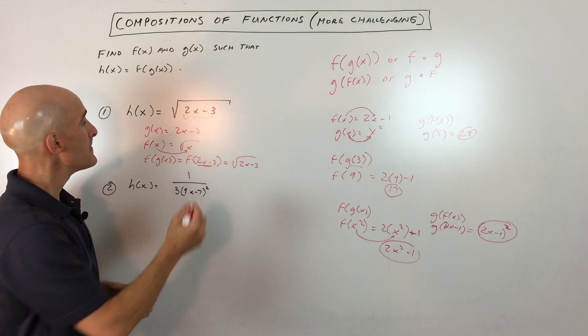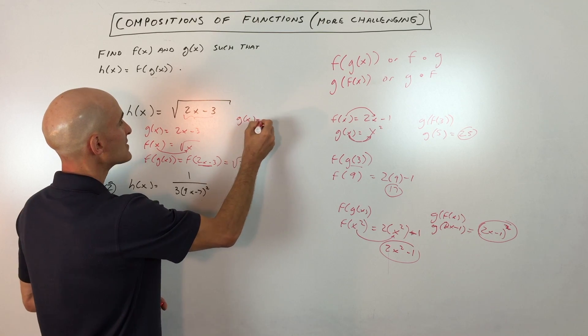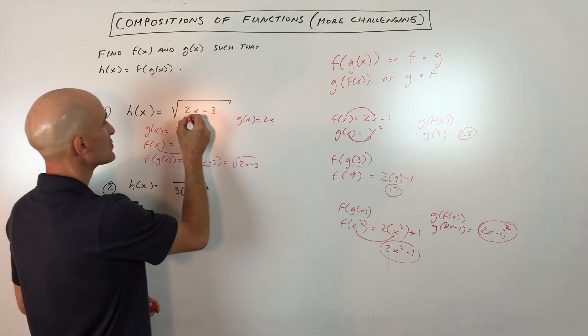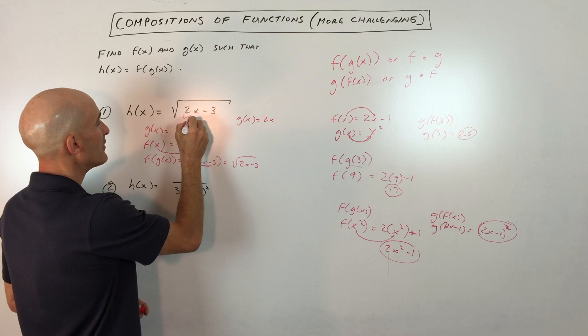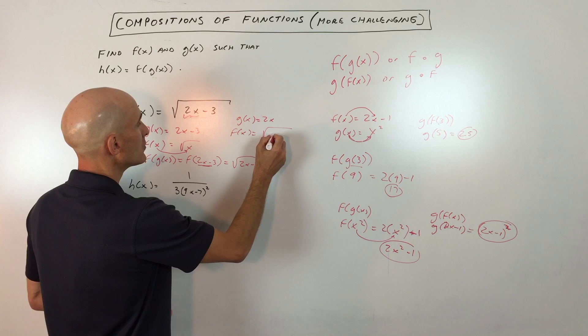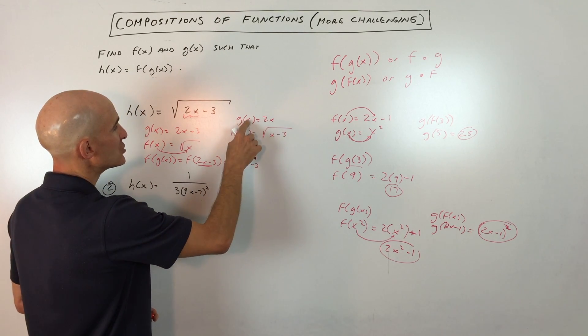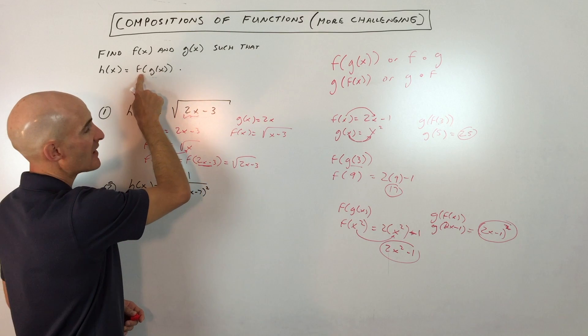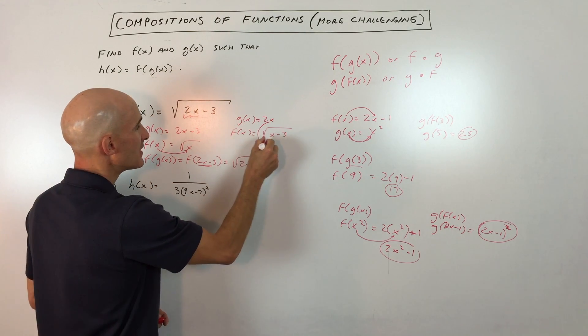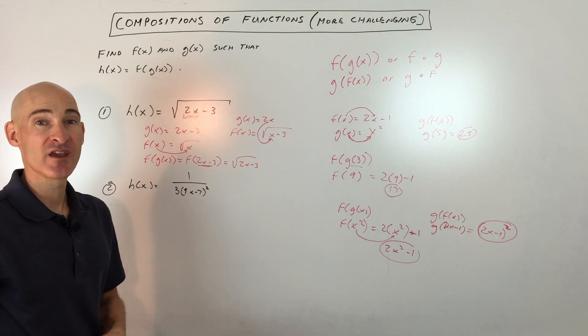There's more than one answer. Another option would be g(x) = 2x, so now we're just using this part here, and f(x) = √(x - 3). When you put the g(x) function into the f function, we're putting 2x in place of x and getting this h(x) function.